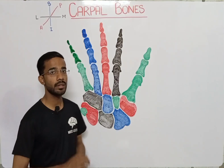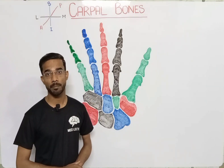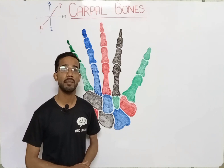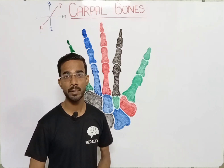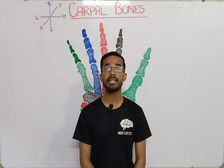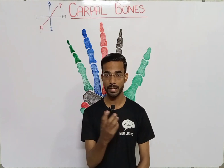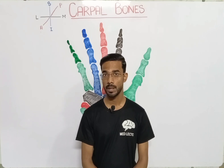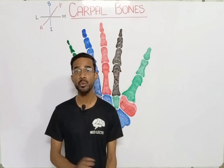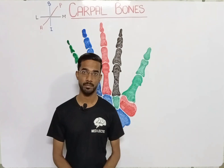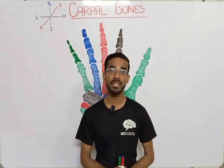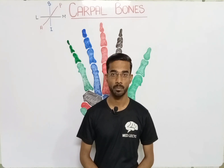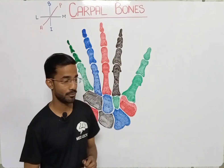In our body you will see eight carpal bones in the wrist. If we compare with the ankle of our body, you see seven bones in the ankle. So this is actually the basic difference.